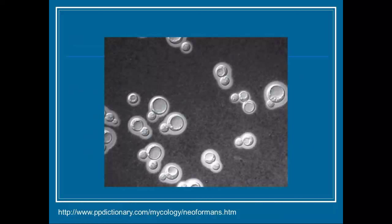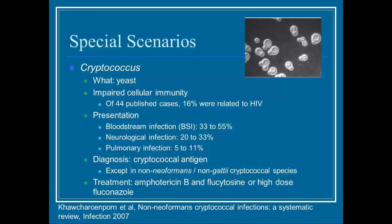A couple of key scenarios: Cryptococcus is a yeast, and in patients with impaired cellular immunity there is increased risk for cryptococcal infection — classically in HIV patients on exam questions. Presentation can be in the blood in up to 55%, neurological infections up to 33%, and isolated in the lungs up to 11%. Special tests include the cryptococcal antigen, though note that in non-neoformans, non-gattii species these tests don't work as well. Treatment is amphotericin B plus flucytosine, and in certain scenarios after induction or in resource-poor areas, high-dose fluconazole may also be used.